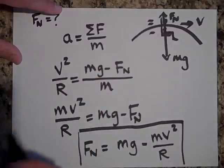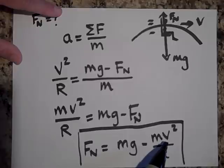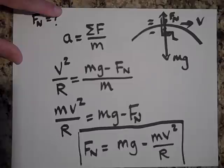Like the seat can't push on you anymore if you're starting to leave your seat. So if you want to solve for the maximum speed you can go and not leave the seat, then just set that equal to zero. And that will solve for V.